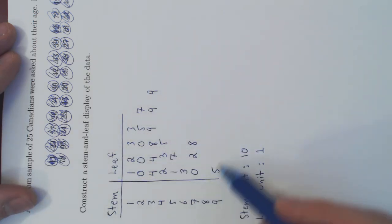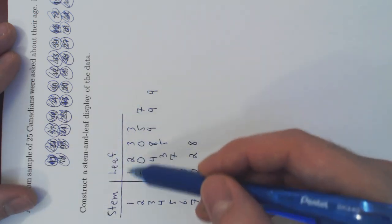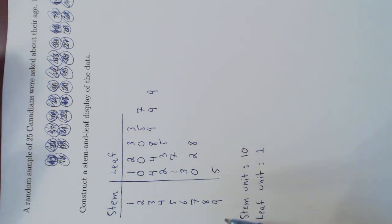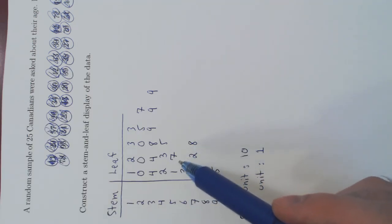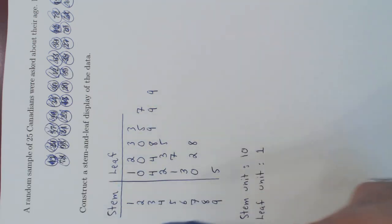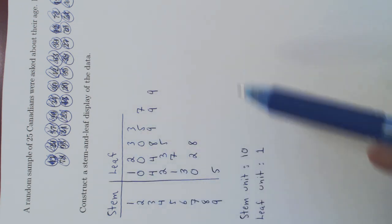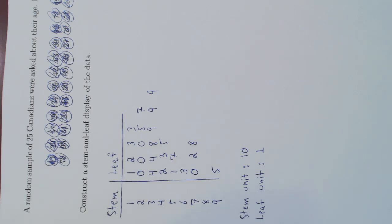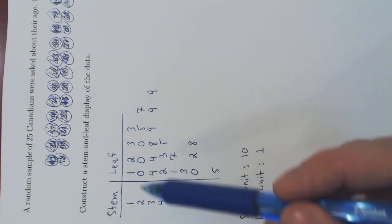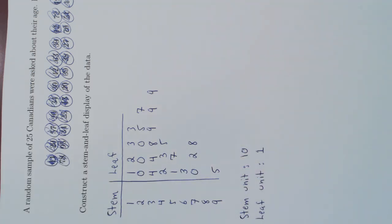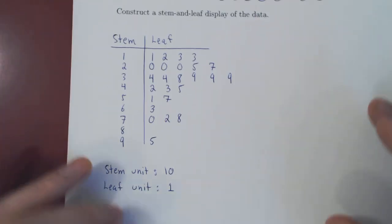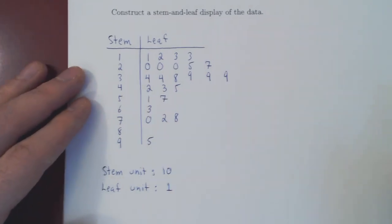So a stem and leaf display is basically just a bar graph where none of the original data is lost. Now, of course, this is limited. If you had a sample of, say, a thousand people, so a thousand different ages, this would be rather a horrible idea, right? The bars would be way too long, and this would be not very functional. So the idea is, for a small number of data values, a stem and leaf display is better than a bar graph because none of the original data is lost. But when you have a much larger sample, then realistically you're much better off using a bar graph than a stem and leaf display. And that's it.